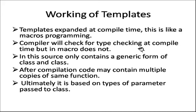The compiler checks what type of value you are passing as a parameter, what type of data types we are passing. Based on that, we can say the compiler will check type safety — but in macros there is no type safety, no checking of data type. In the source code, only a generic form of the class is contained. After compilation, code may have multiple copies of the same function depending on what type of data types we are passing from the main method. Ultimately it is based on type of parameter.